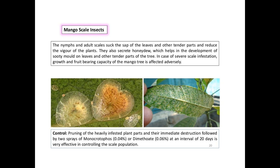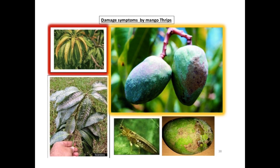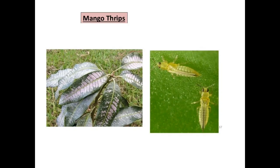Coming to thrips complex in mango: Scirtothrips dorsalis, Caliothrips indicus, Leptothrips gracilis, Thrips distorts, and others. Adult and nymph thrips lacerate tissue and suck oozing cell sap. They feed on leaves, inflorescence, and young fruit. Leaf-feeding species feed on mesophyll tissues near leaf tips; affected leaves show silvery sheen and leaf edges curl upward with small spots of fecal matter. Affected fruit shows corky appearance. Use dimethoate, monocrotophos, abamectin, acephate, deltamethrin, lambda-cyhalothrin, or lufenuron for control.